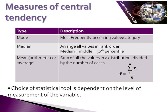The mode is quite simply the most frequently occurring value or category within a data set. The median is when you arrange your data set in rank order and find the middle value, or the 50th percentile. The mean — we are looking at the arithmetic mean — is often recognised as simply being called the average: the sum of all the values in the distribution divided by the number of cases.